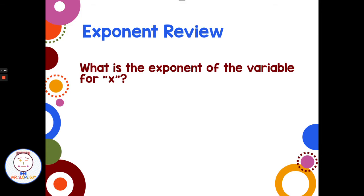What is the exponent of the variable for x? Every time we write x, it's really x to the first power. The coefficient is one and the exponent is one — they are always there. We're just lazy and don't write them, but we need to know that every x is really one x to the first power.